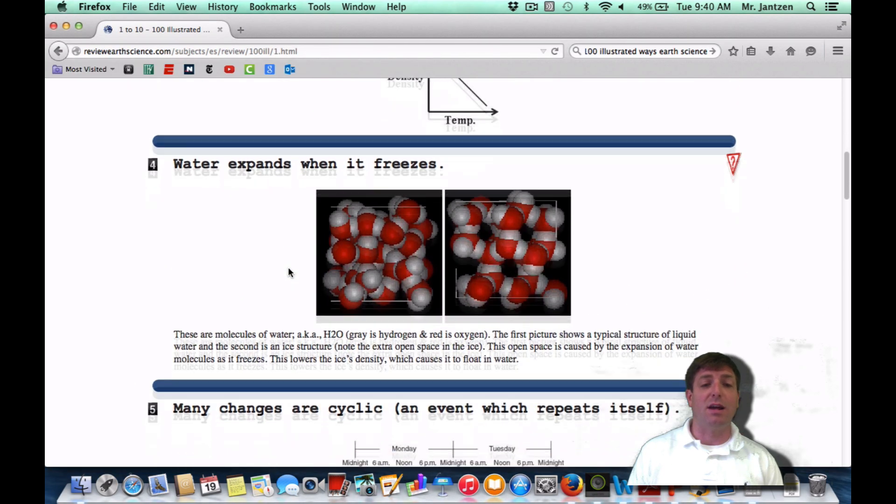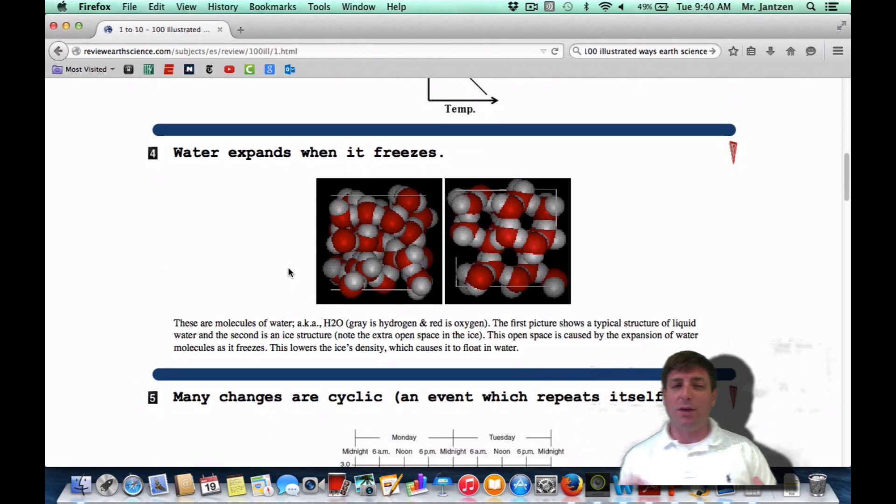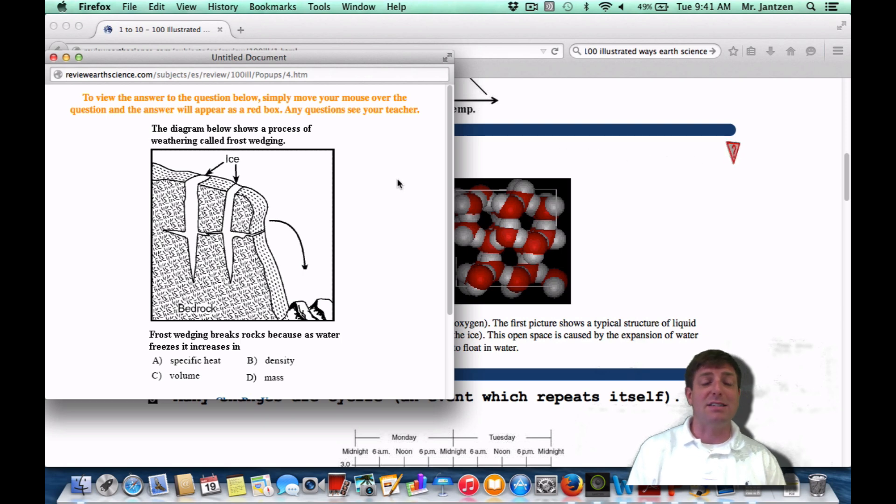Number four, water expands when it freezes. Water is a very special substance. With most objects, the density is highest in the solid phase except water. Water actually expands when it freezes. That's because when it freezes, the molecules actually spread out. Those H2O molecules actually spread out. So when that happens, it's actually become a little bit more buoyant.